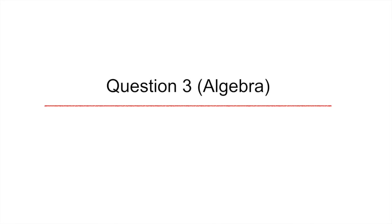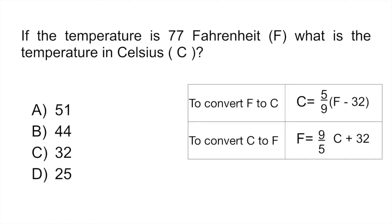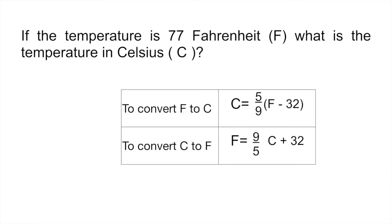Question three is an algebra problem. This question is not only an algebra problem, it's also going to test your ability to read tables. So it says, if the temperature is 77 Fahrenheit, which they represent with the letter F, what is the temperature in Celsius, which is represented with the letter C? So if you look at the table, there's two rows, and the first row is essentially telling you that if you want to convert a temperature from Fahrenheit to Celsius, so from F to C, you would use that formula.